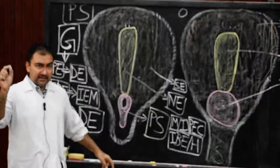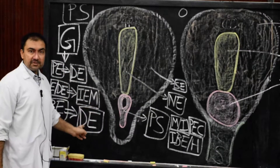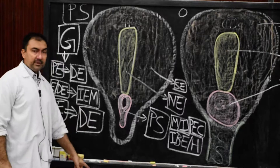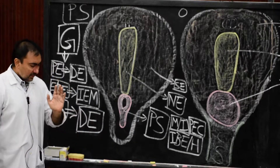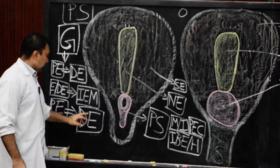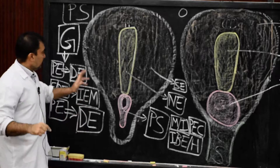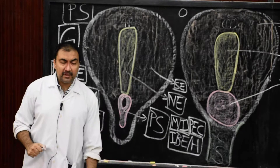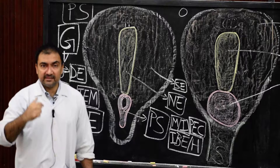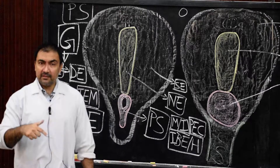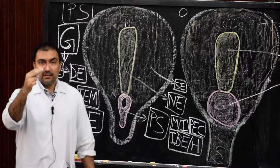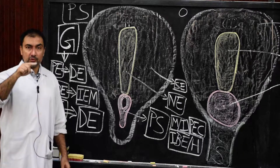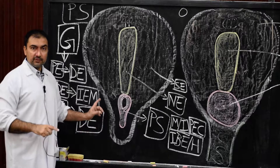This is the development of the trilaminar germ disc. At this stage, as a result of gastrulation, there is development of the trilaminar germ disc. The primitive streak will serve as the primary organizer for the development of the next stage. The next stage after gastrulation will be development of the notochord — the primitive streak appears as the primary organizer for the development of the notochord.